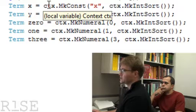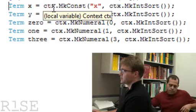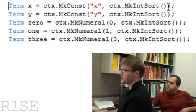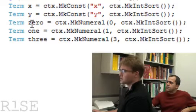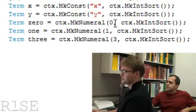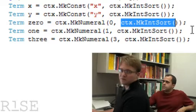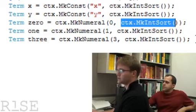And the way the terms are created is you can create a constant term for X. You give it a name and you give it a sort. The sort for X is an integer. And you can also create numerals. So the 0 numeral has value 0 and it has integer sort. Alternatively, you can give sorts reals or bit vectors. Bit vectors are used for using integers.